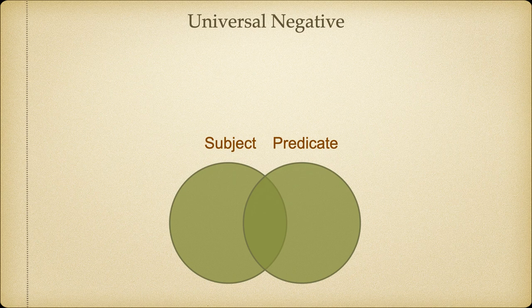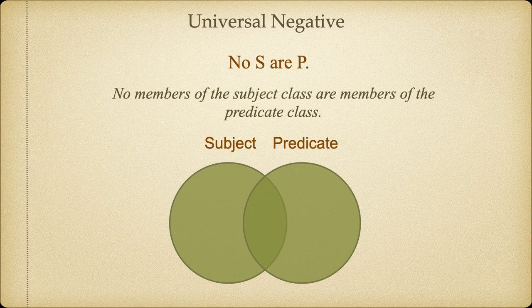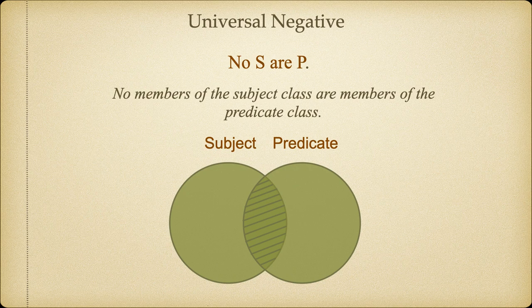Now let's look at a universal negative proposition. This proposition is telling us that there are no members that are shared between the two sets. In other words, this proposition is telling us that region 2 is going to be empty. In order to indicate that on the diagram and visualize it, we need to eliminate that region, and so we shade it out. By shading out region 2, we have eliminated anything existing in that area that shares properties of both classes. Now we can see that there are no members of S that are also members of P — that is, no S are P.